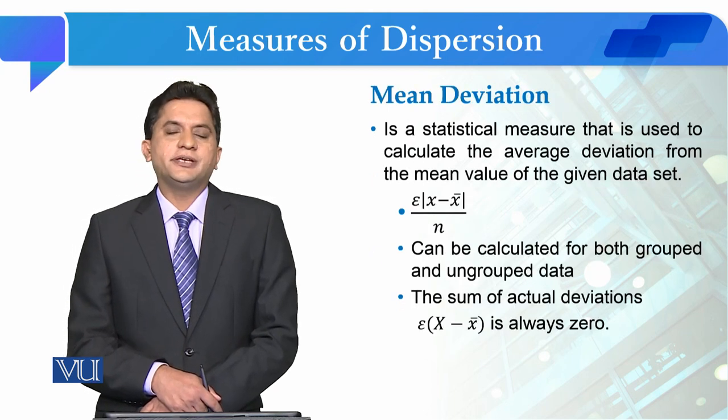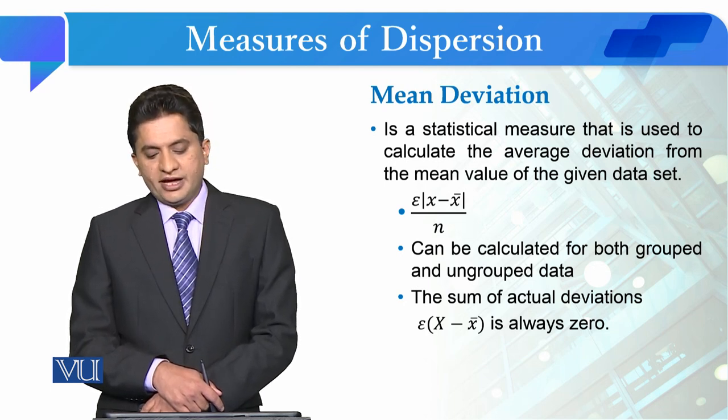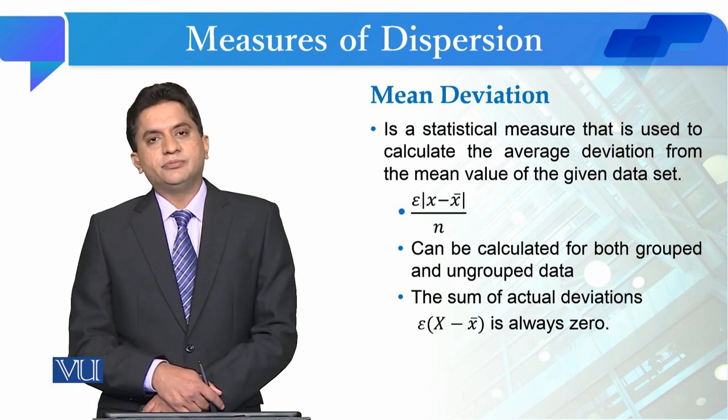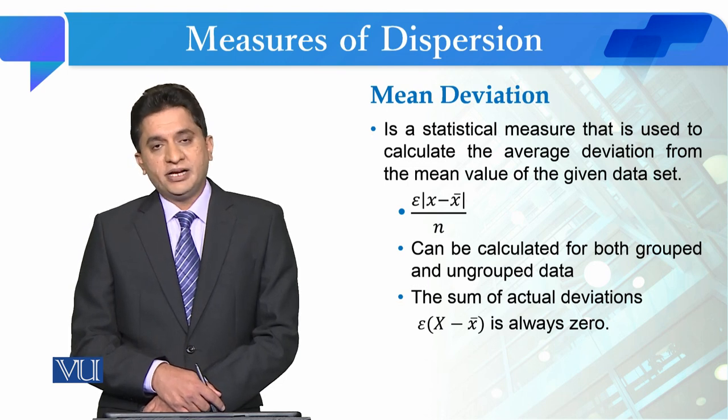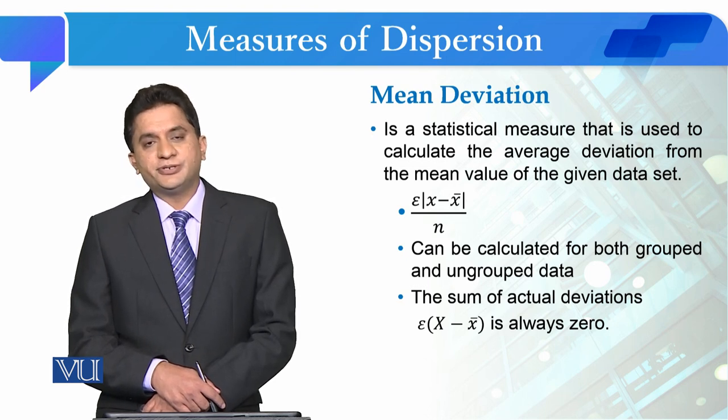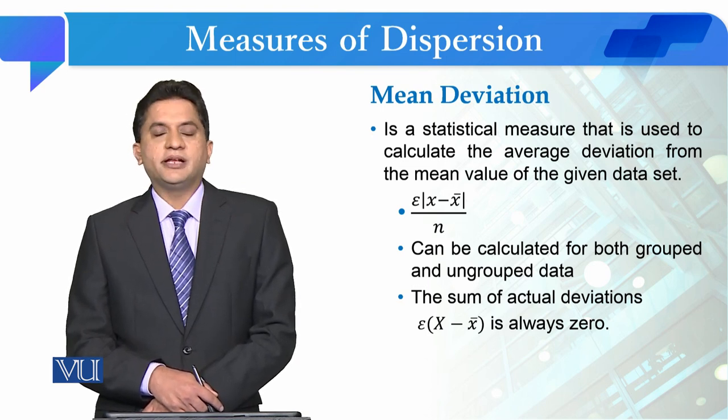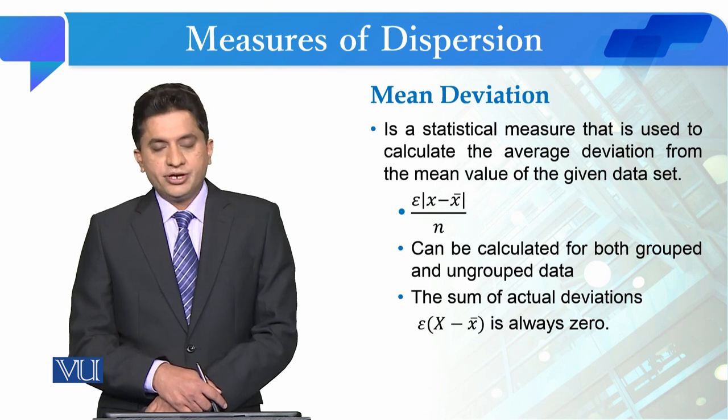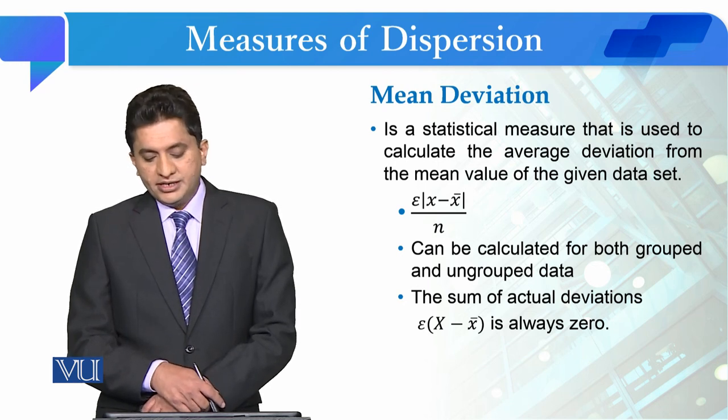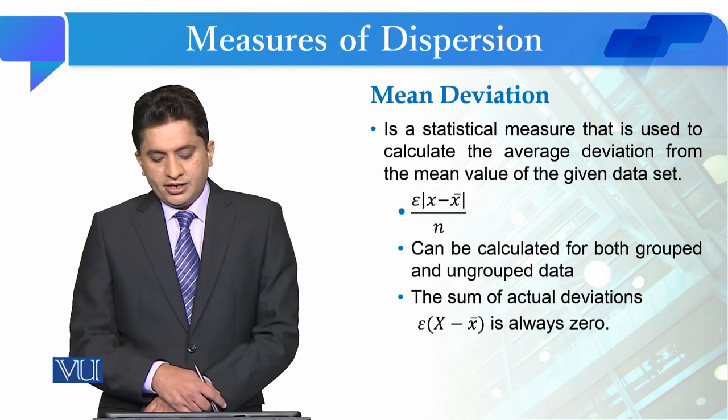After interquartile range, the third measure is mean deviation. Mean deviation is a statistical measure that is used to calculate the average deviation from the mean value of the given data set. This is a measure that is more accurate than the first two measures when we talk about the relevance of the dispersion from the midpoint. Its simple formula is summation of |x minus x̄| divided by n. It can be calculated for both grouped and ungrouped data. One feature is that the sum of deviations is always zero.